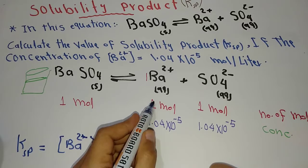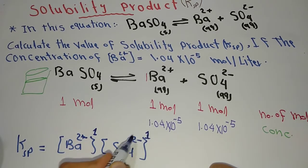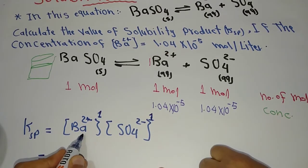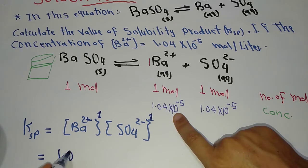Here is 1 mole for barium and also 1 mole for sulfate, so the concentration equals 1.04 × 10^-5 for both ions.